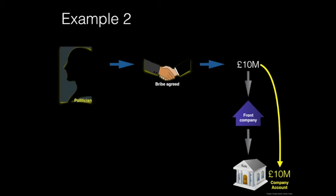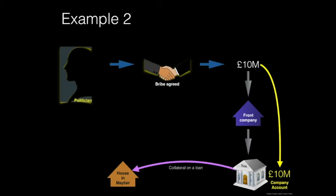The money remains in the same bank account and is used as collateral to purchase a property in Mayfair, used for his occasional trips to the UK. Unlike the earlier drug trafficking example with visible layering through money mules, here there is no recognisable placement activity, as the proceeds of the bribe were already legitimately present before being wired to the front company. Layering is far more difficult to identify because the proceeds remain passive in the account, acting only as collateral — and there is no obvious integration since the money does not move but is solely used as security for a loan.